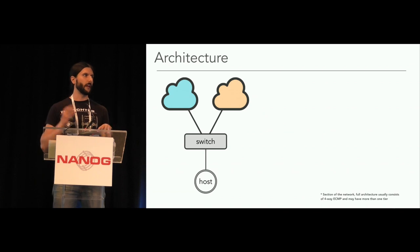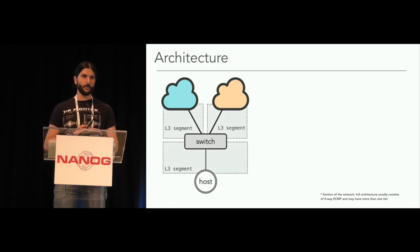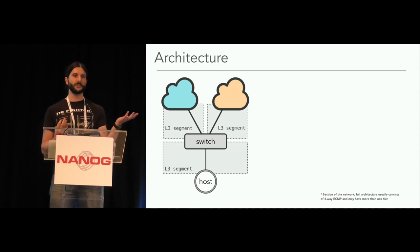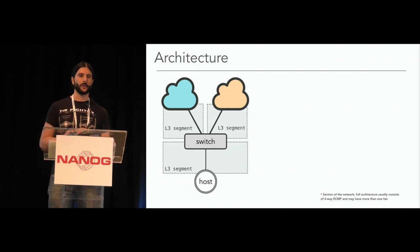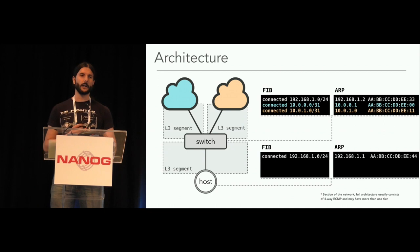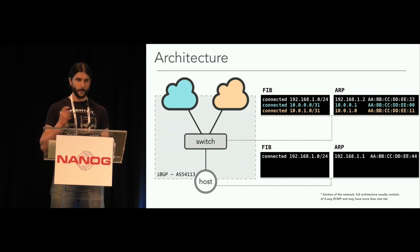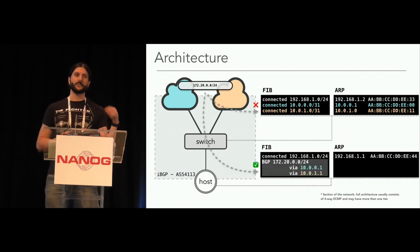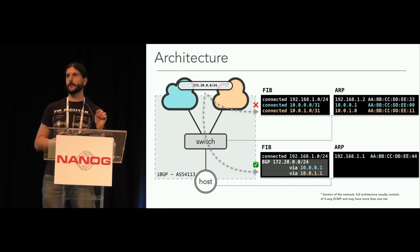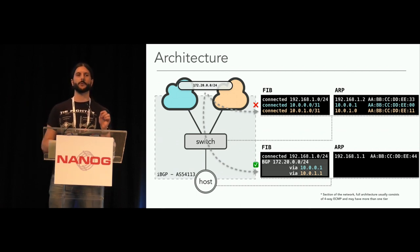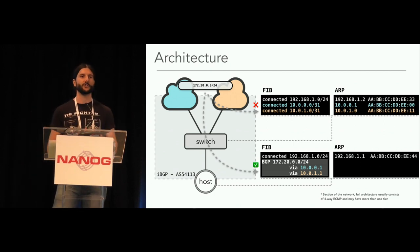We're going to use a simple network — one host, one switch, and two transits — to illustrate how the original control plane works. We have a Layer 3 segment on each link going to the transits and another Layer 3 segment from the switch to the host. The FIB has the connected networks and the ARP table has the neighbors — nothing surprising. Now, we run iBGP down to the host, which means prefixes come in and get installed in the FIB of the host. But we don't install anything on the switches since they can't hold the full routing tables.